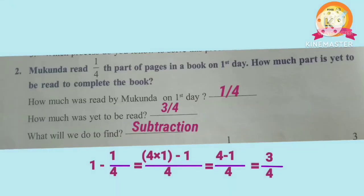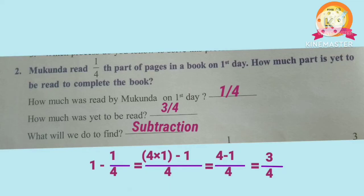Second problem: Mukunda read 1 by 4 part of pages in a book on the first day. How much part is yet to be read to complete the book? Mukunda read 1 by 4. To find the remaining part, subtract from the total: 1 minus 1 by 4, which equals 3 by 4. The process is subtraction.